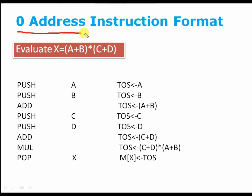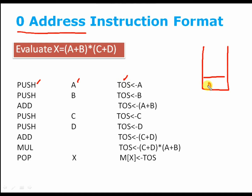The last one is zero address instruction format. Here we are going to use a stack. First we push A and store it at the top of the stack — TOS means top of the stack. Here A will be stored. Then we push B, and B will be stored. Now we perform an add operation, which will add these two values and A plus B will be stored at the top of the stack.